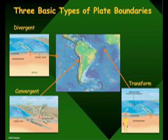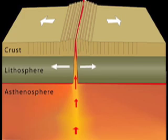Boundaries. There are three fundamental kinds of plate boundaries. Divergent — plates are moving apart. We're actually making new oceanic lithosphere at these spreading ocean ridges.